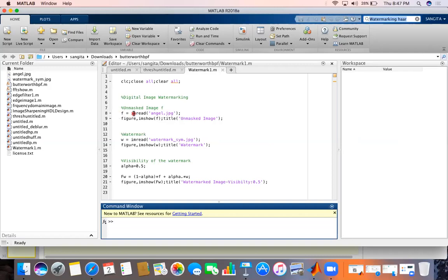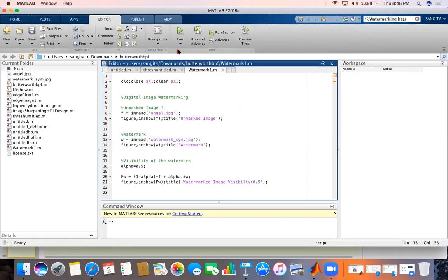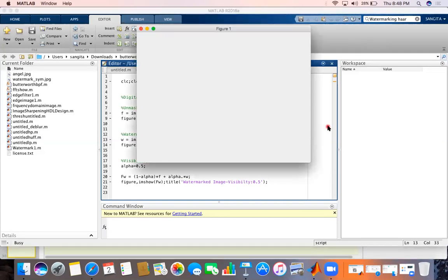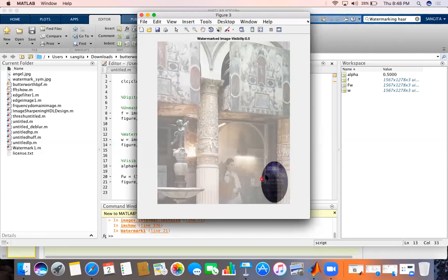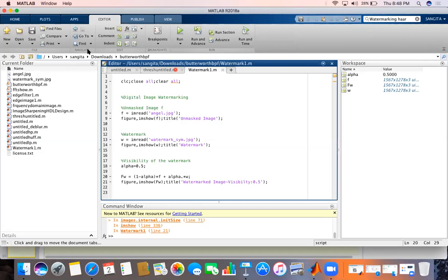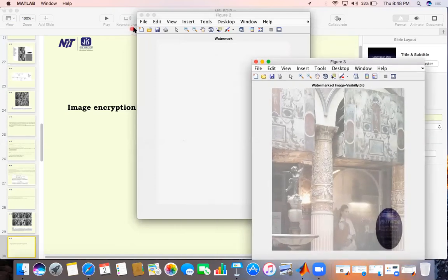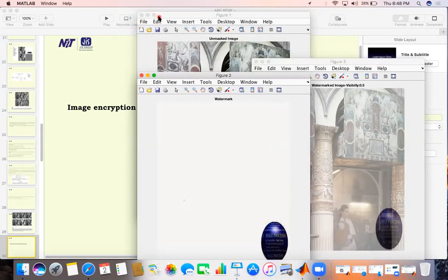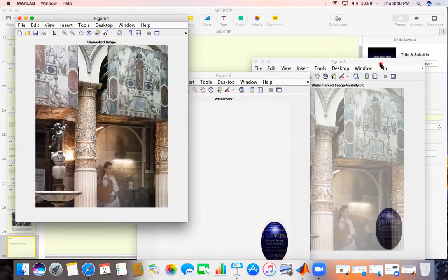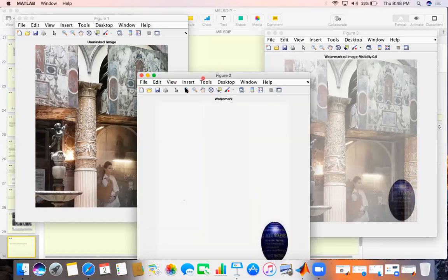So we will go to MATLAB. This is the program. This is the original image. And this is the masked image. And after combining this is visible watermarking. By this formula, how it will be combined. So this is the final combined image. This is the original image. And after watermarking, this is the image. And this is the watermark.